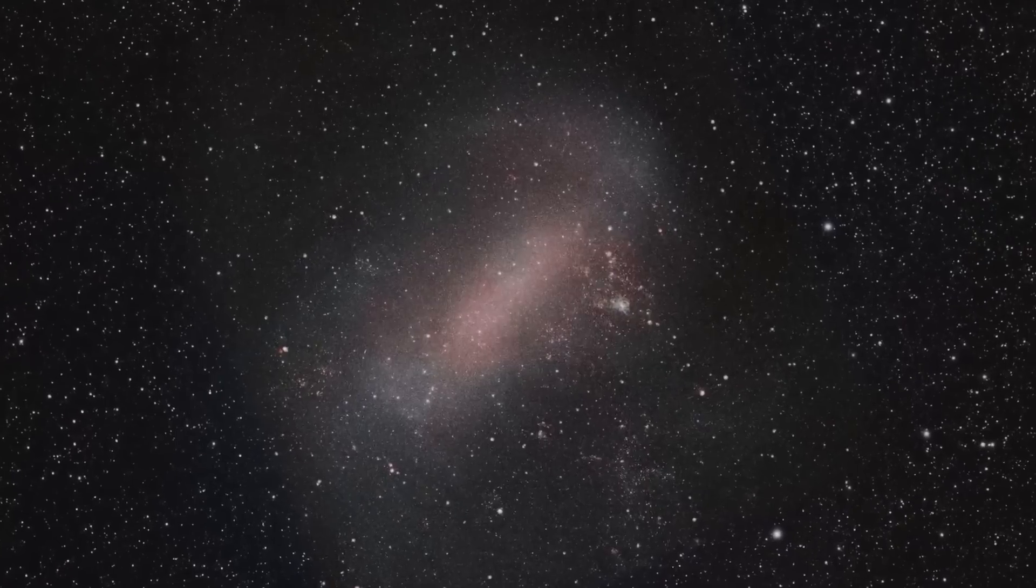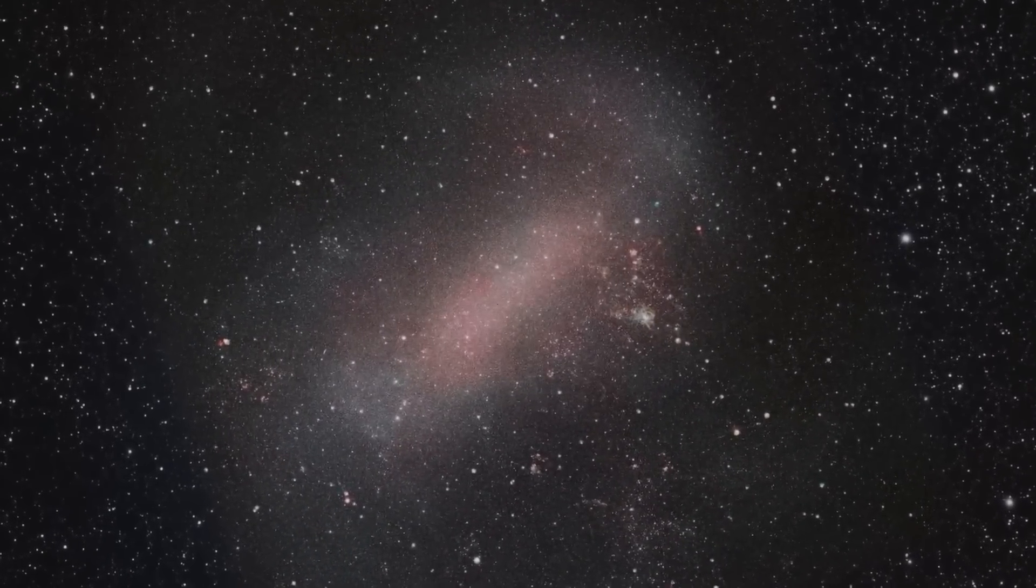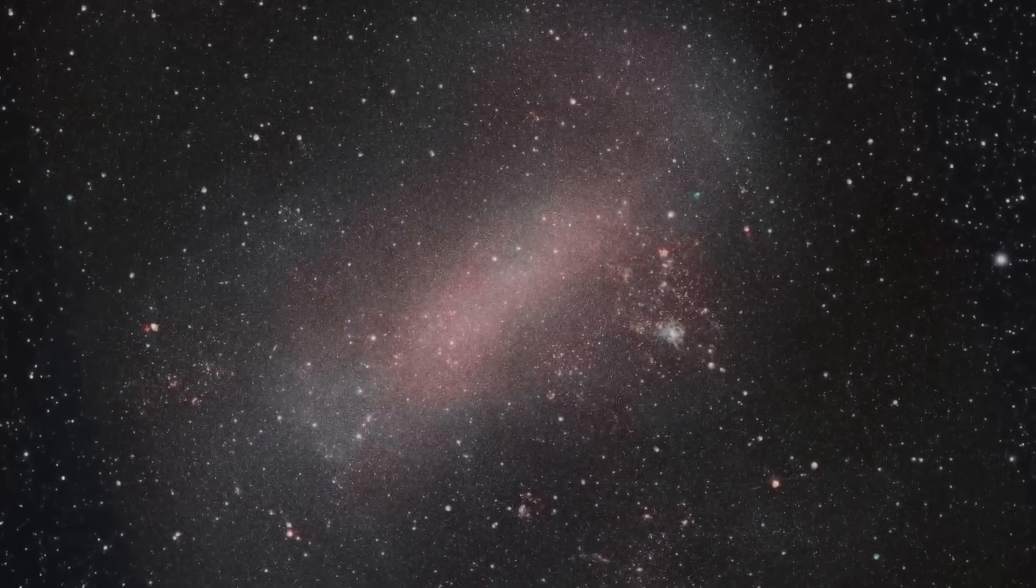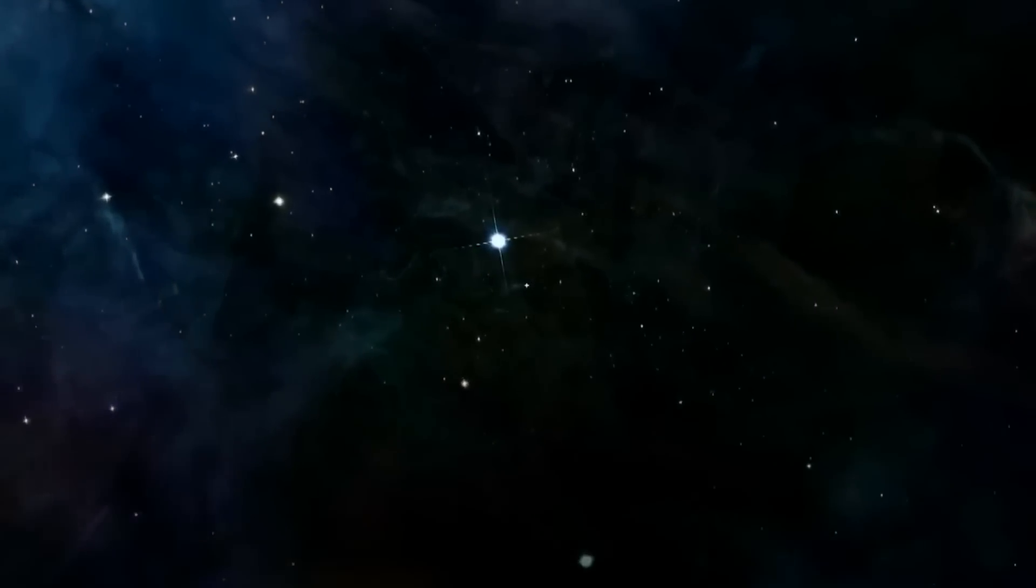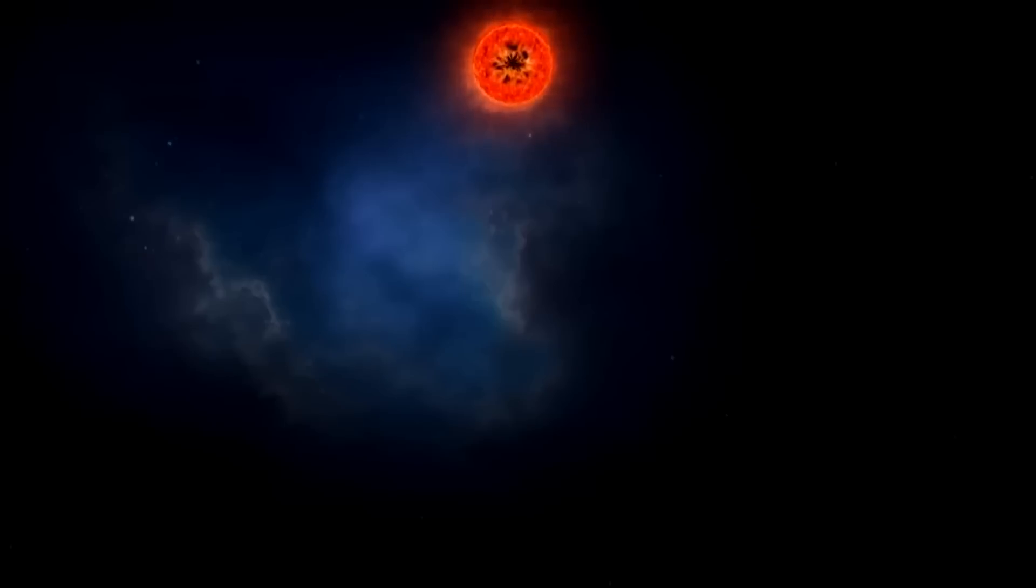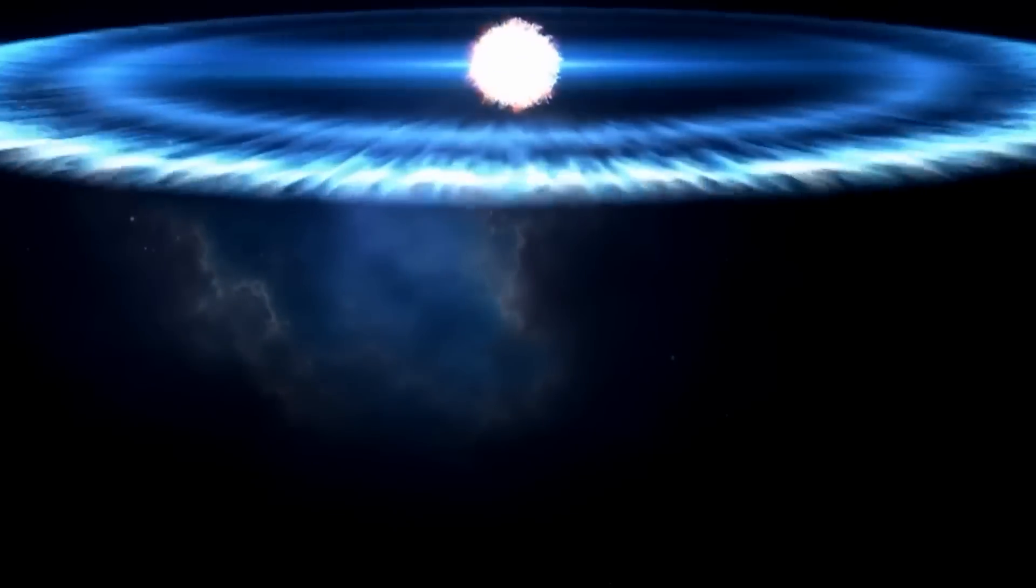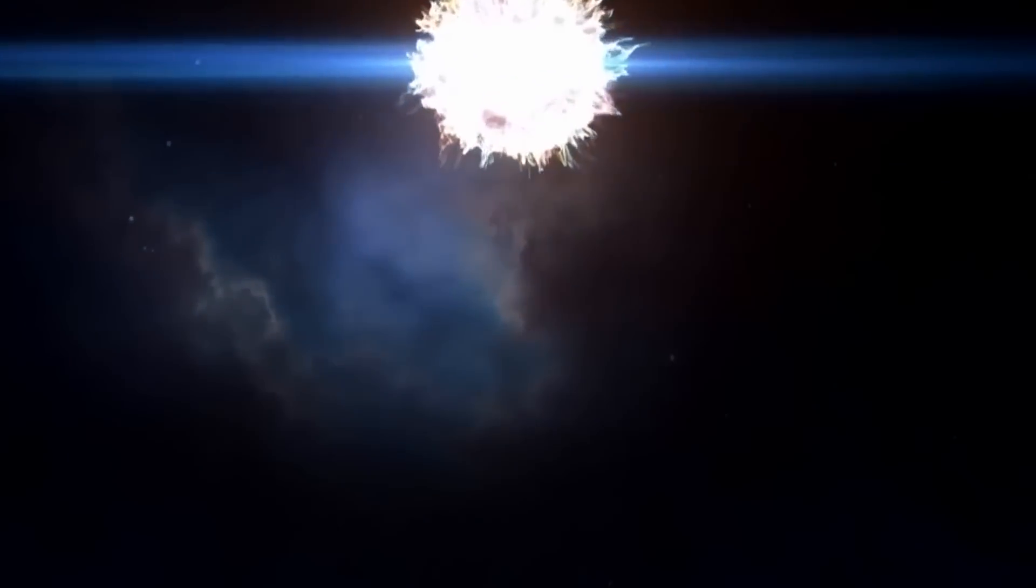Another reason Betelgeuse stands out is its distinctive bright red color. Being a red giant star, it's easily recognizable. However, the best time to observe Betelgeuse depends on your location on Earth. If you're in the Northern Hemisphere, the winter months from January to April are ideal. During this period, the star rises just as the sun is setting below the horizon. While Betelgeuse is fascinating for various reasons, its imminent fate has been attracting a lot of attention.